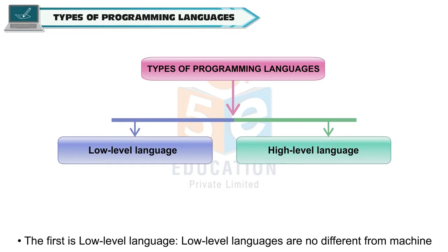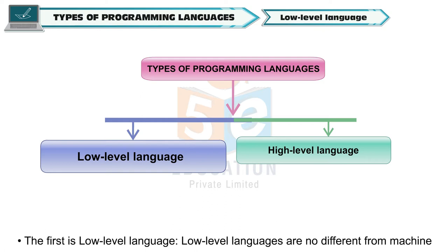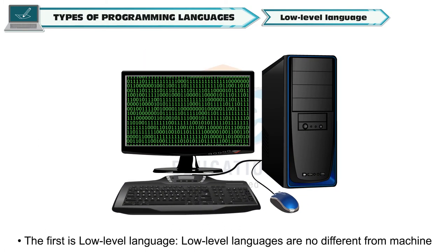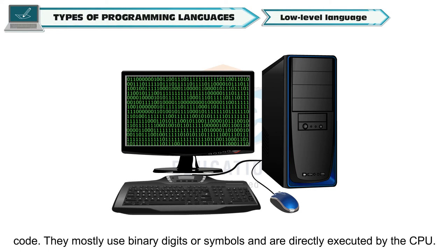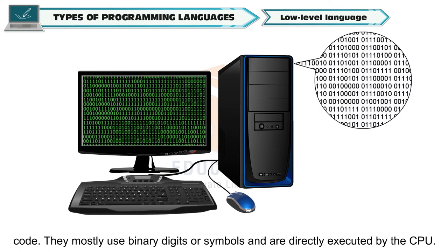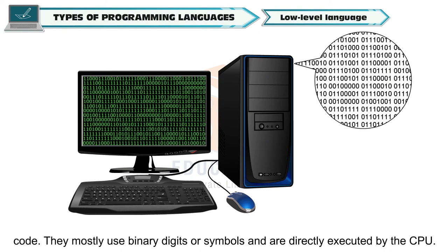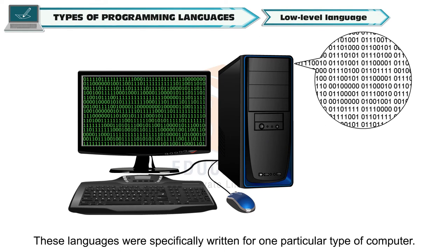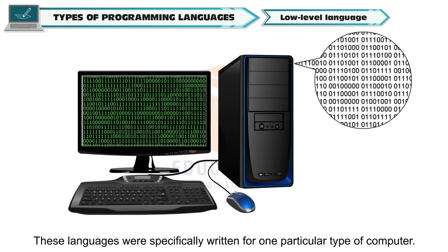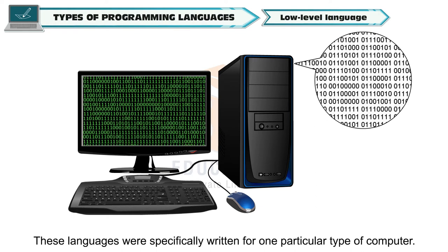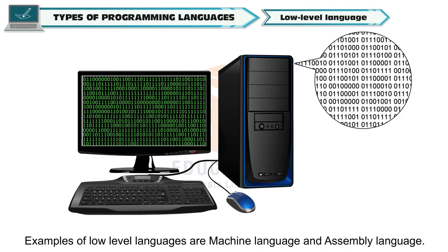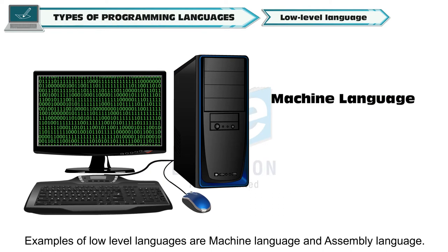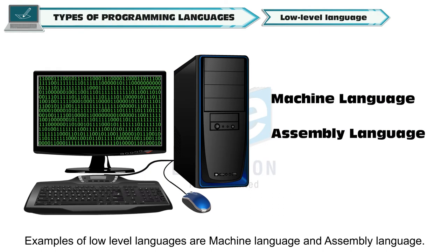Development of programming languages made writing programs more user-friendly and understandable. There are two types of programming languages. The first is low-level language. Low-level languages are no different from machine code. They mostly use binary digits and are directly executed by the CPU. These languages were specifically written for one particular type of computer. Examples of low-level languages are machine language and assembly language.